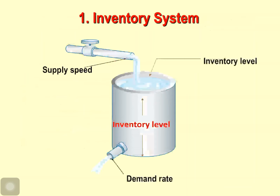So let's go to the first part: what is inventory? Inventory is stock of items kept to meet future demand. To understand inventory level, think of a faucet pouring out water into a bucket, along with the demand rate. The inventory level is the gap between supply and demand — how much water is in the bucket is what we consider the inventory level.